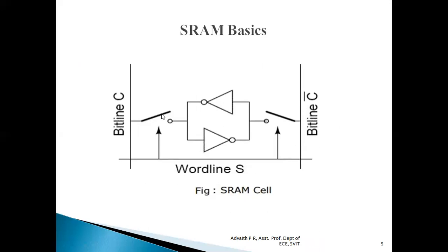If you observe, we are making use of two switches and those two switches are controlled by the word line. The switches used here are N-channel MOSFETs. One terminal of the first switch is connected to the bit line, and the other terminal is connected to the inverter cascaded in parallel. Similarly, one terminal of the second switch is connected to the bit bar line, and the other terminal is connected to the inverters. The inverters cascaded in parallel are the main elements used to store the data.